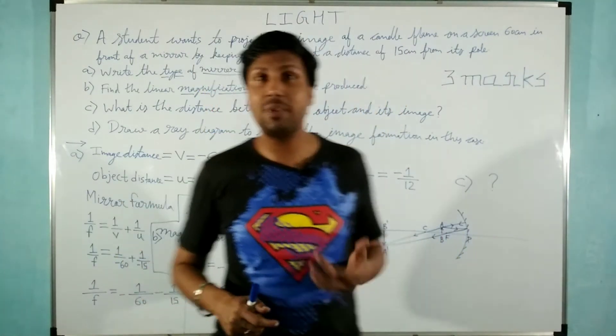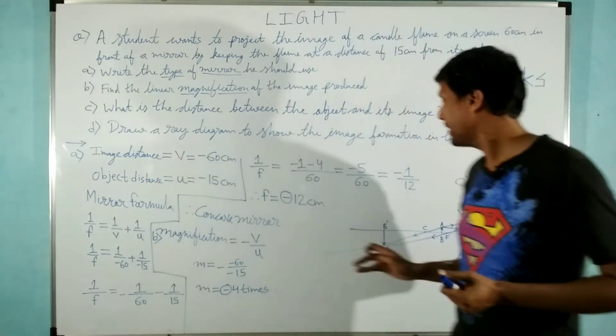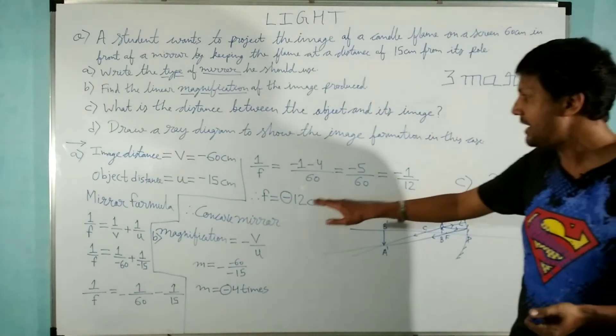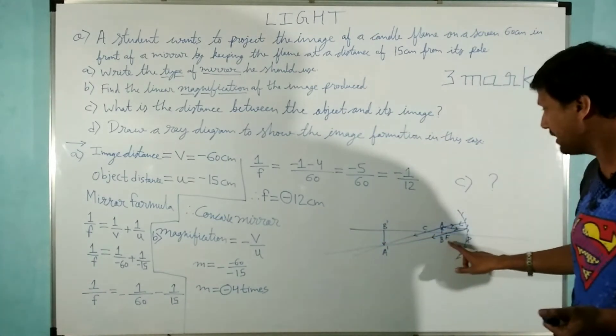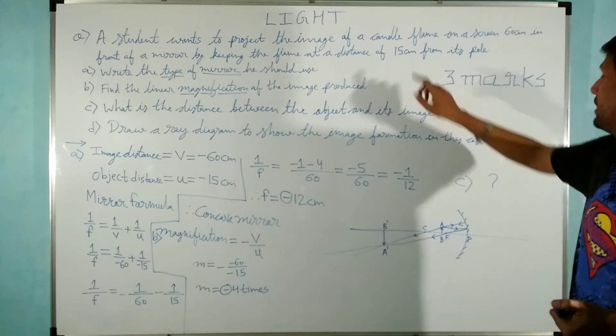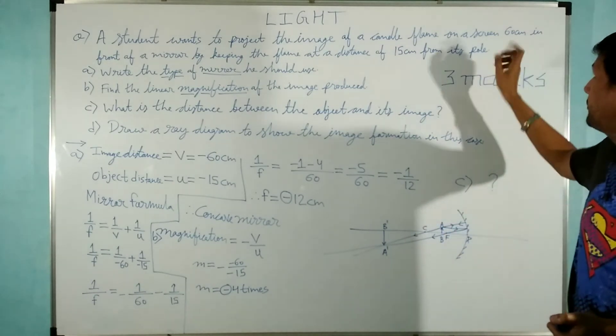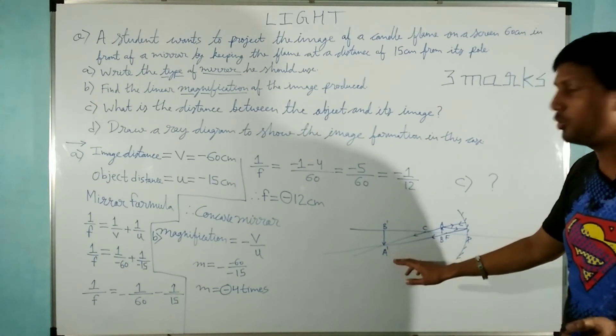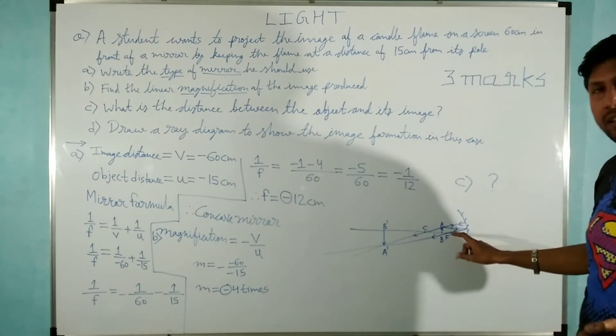Now the diagram. The fourth part of the question. What is given in the diagram? We know that focal length is minus 12. So focal length is minus 12. And where is the object placed? At 15 centimeter. 15 centimeter the object is placed. Image is forming on the screen at 60 centimeter distance.